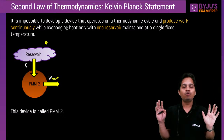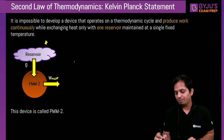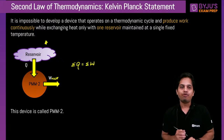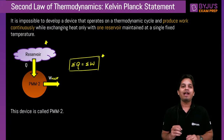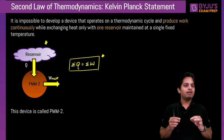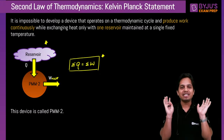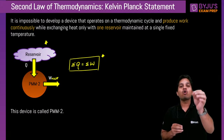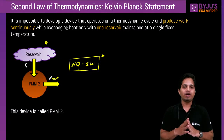By the first law of thermodynamics, whatever heat is given to the system will be converted to work. But Kelvin-Planck says that this machine is impossible. It says it is impossible to develop a device that works on a thermodynamic cycle and produces work continuously while exchanging heat with only one reservoir.